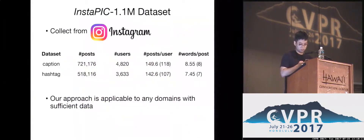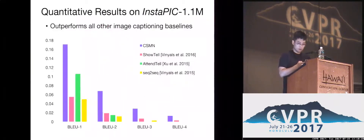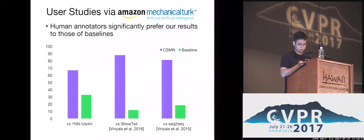We collect data from Instagram and released it as the InstaPic 1.1 million dataset. We compare our model's performance with other state-of-the-art captioning models and it outperforms in our metrics. We perform a user survey to check user preference between different algorithms, and human annotators much more prefer our results than others.